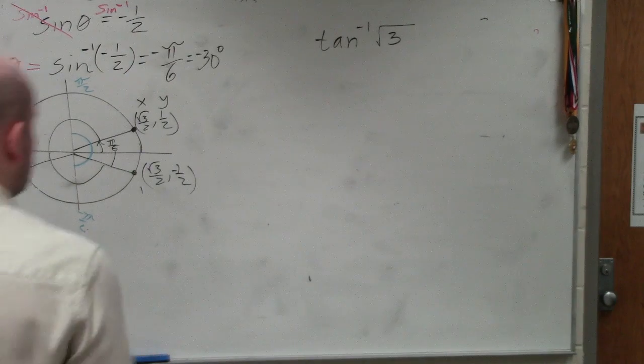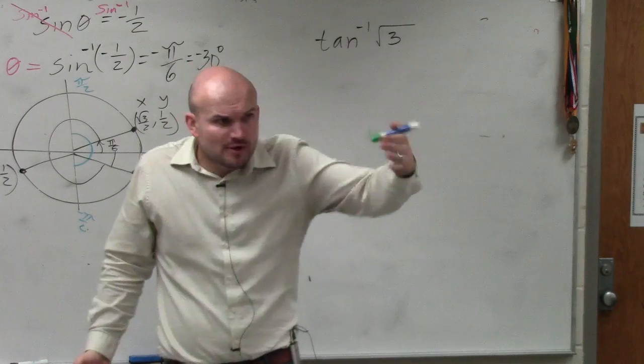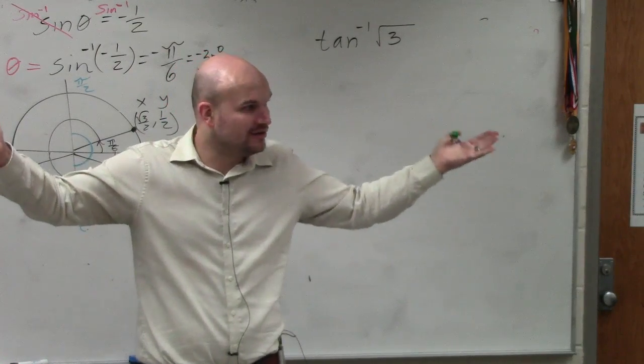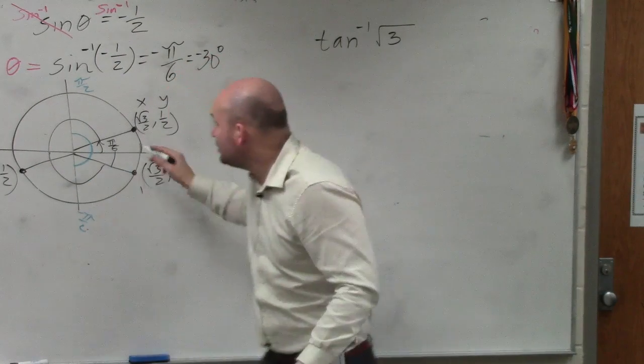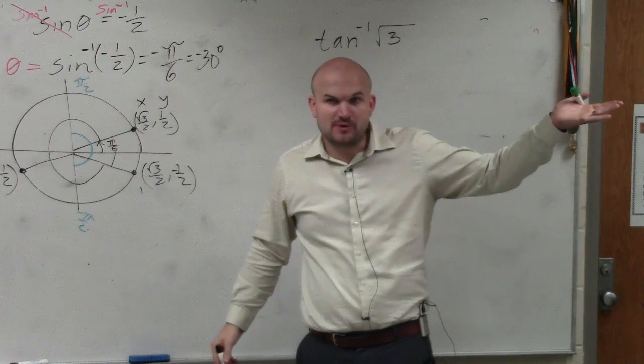OK. If you guys look at tangents, again, what are we trying to find? When we're using the tangent inverse, what are we looking for? Are we looking for a side length, a value, an angle? We're looking for an angle, right? We're looking for the angle where our tangent is going to equal square root of 3.